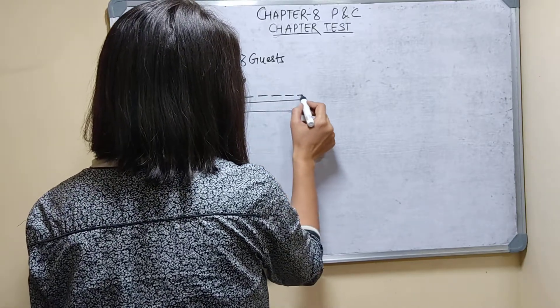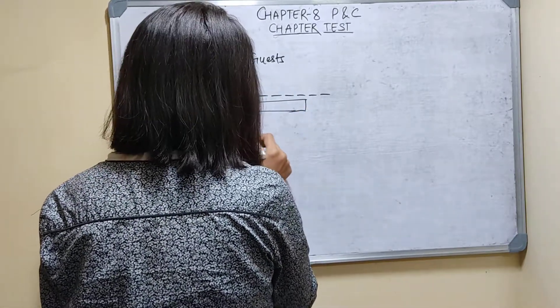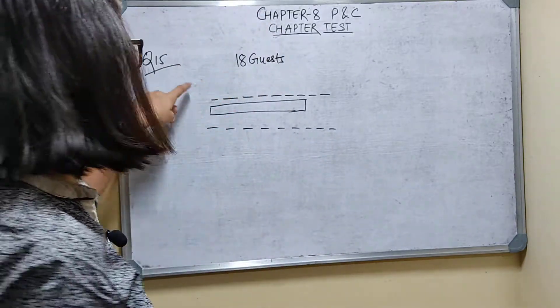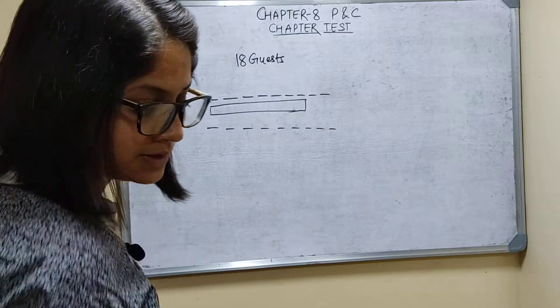Counting 1 through 9 on this side, and 1 through 9 on that side, totaling 18 guests - 9 will come this side and 9 will come this side.